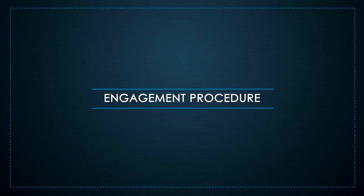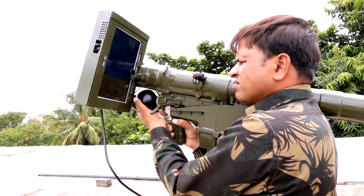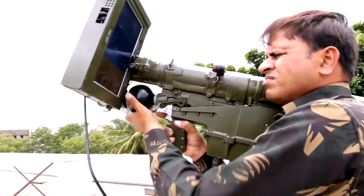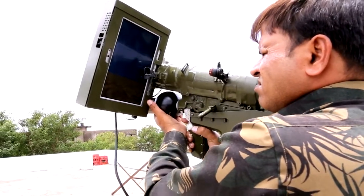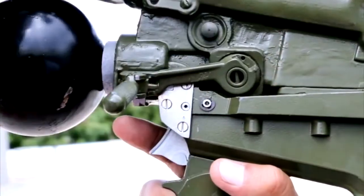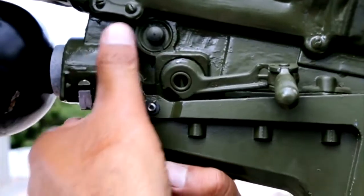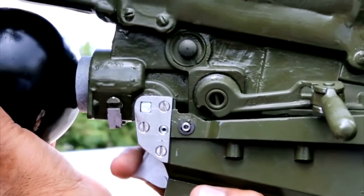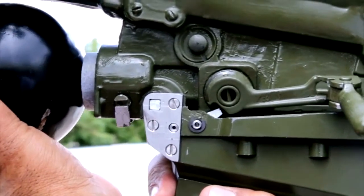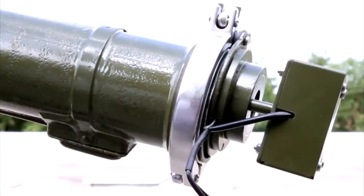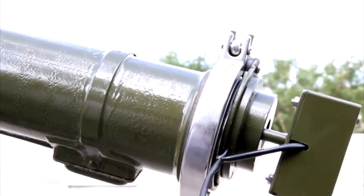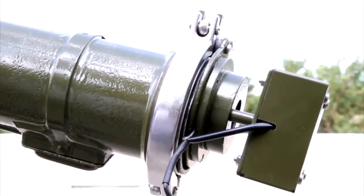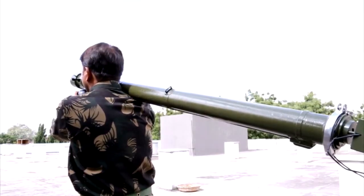The engagement procedure: as soon as the target is seen by the operator on the video screen, he aligns the sight with the target and moves the percussion lever to the extreme position, simulating uncaging of the IRHH. As soon as the operator hears the buzzer sound and sees the light indication, he presses the trigger. In manual mode he keeps the trigger in the mid position for 0.5 seconds before pressing it to extreme position. In auto mode he directly presses the trigger to extreme position. The missile is launched and can be seen on the video screen following the synthetic target before destruction.